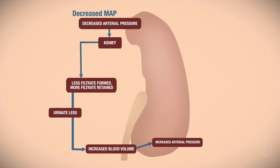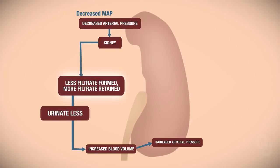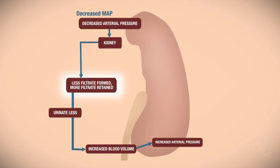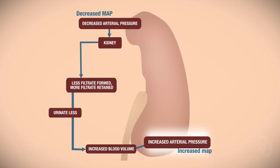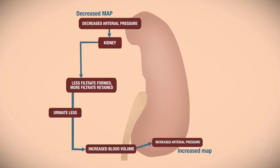When the mean arterial pressure is lowered, that gets detected by the kidneys. When the kidneys detect this low mean arterial pressure, they produce less filtrate, which means that you urinate less. If we urinate less, that's going to increase the blood volume, and by increasing the blood volume, that will increase MAP — because the goal, starting from a low MAP, is to return MAP back to normal by elevating it. Now that's just one pathway.